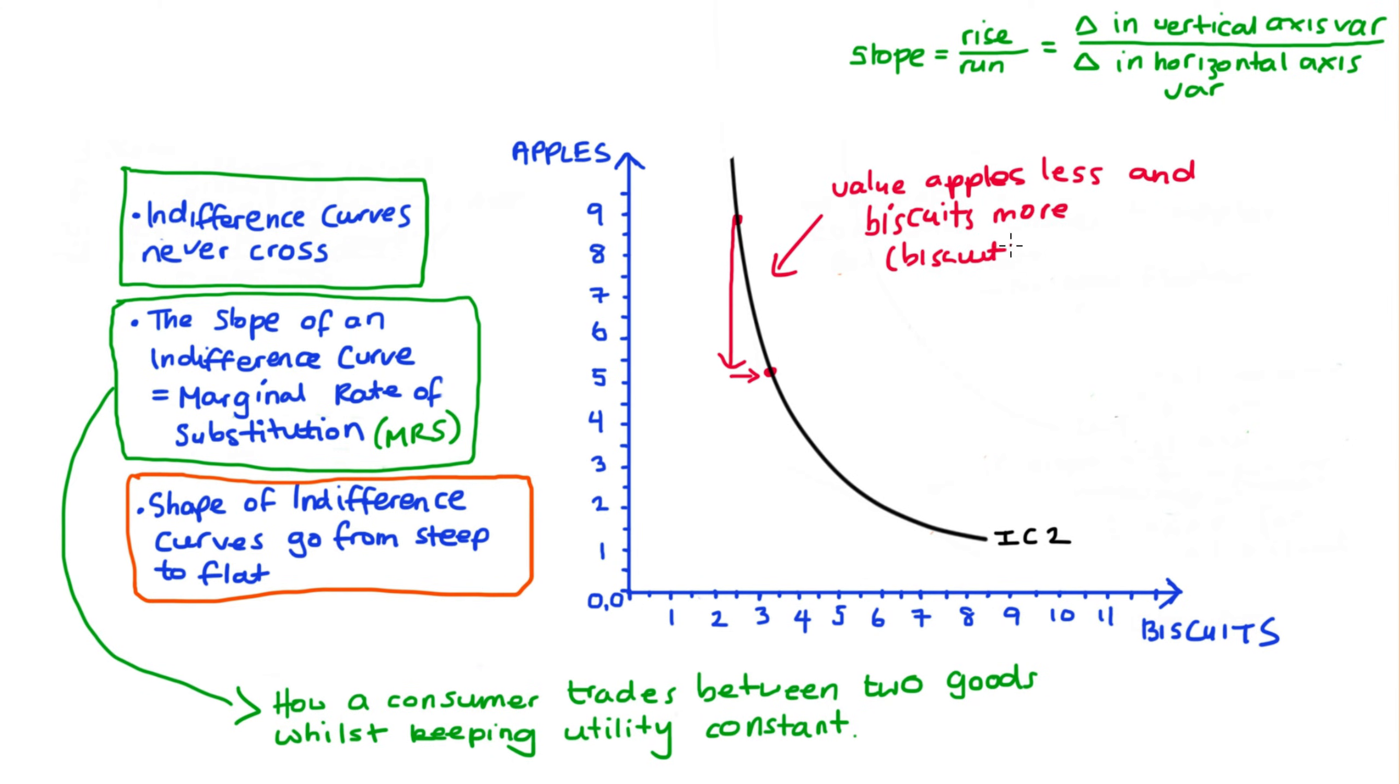So here I value biscuits more and I put less value on apples and this corresponds to valuing a good more when it's scarce or when we don't have a lot of it.